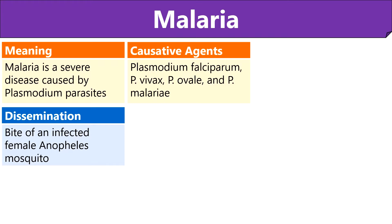We know that the mosquito bite is a root cause of malaria. Female Anopheles mosquitoes are the carriers of the Plasmodium parasites and they transfer or disseminate malaria in humans during a blood meal. It must be clear that the mosquitoes do not cause malaria, but being a carrier or vector of the Plasmodium parasite, they just spread malaria from one person to another.